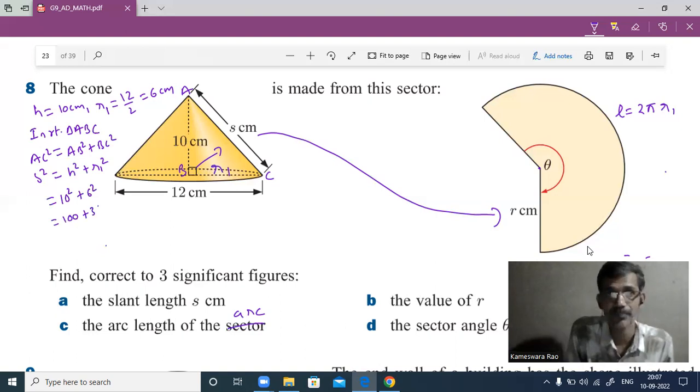S squared equals 136. The slant height s equals the square root of 136. Using a calculator, you will get the slant height as 11.66, which is approximately equal to 11.7 centimeters.